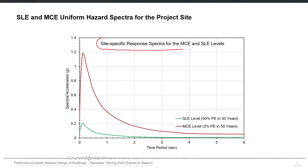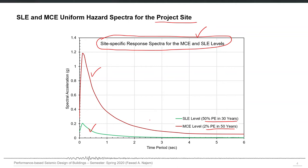These are the final site-specific response spectra for the MCE level and SLE level for this particular project site. The MCE level spectrum is defined as 2% probability of exceedance in 50 years, and the SLE level is 50% probability of exceedance in 30 years. These are the original MCE and SLE level spectra — the values are not modified for risk targeting.